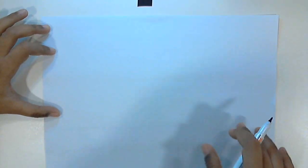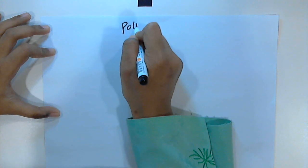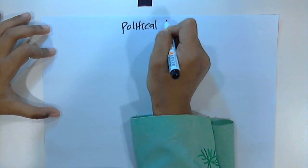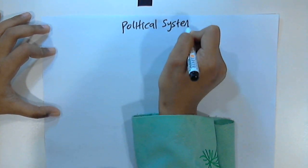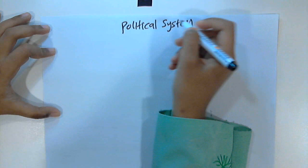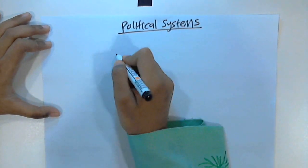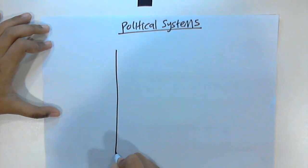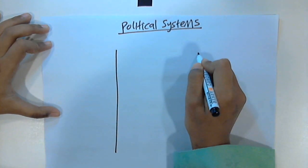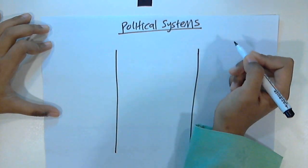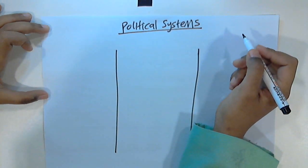Good afternoon class. Today we are going to learn a new topic: the political system in Malaysia. Basically in Malaysia, our government adopts three different types of systems.